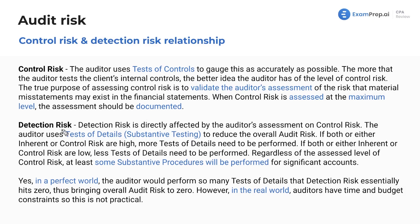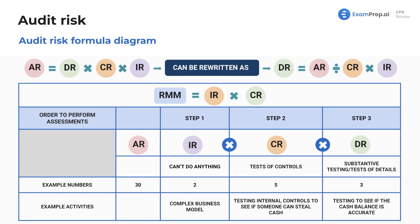Detection risk is directly affected by the auditor's assessment of control risk. That's why there's a sequence: first we assess inherent risk because we can't do anything about it, then we assess control risk, and because of what we assess for control risk, that's going to affect what we get for detection risk.